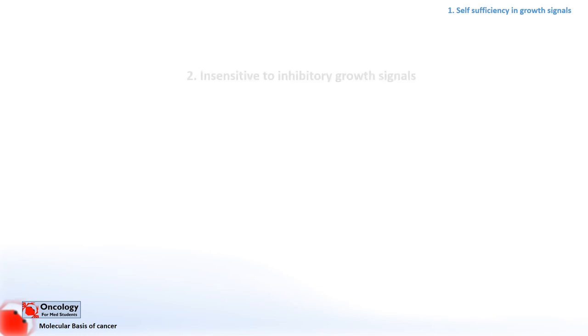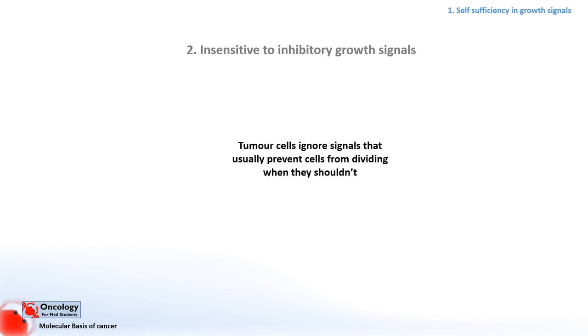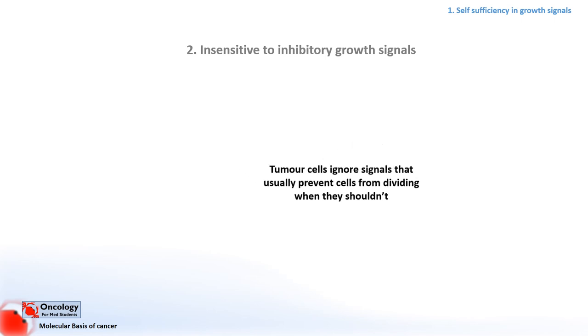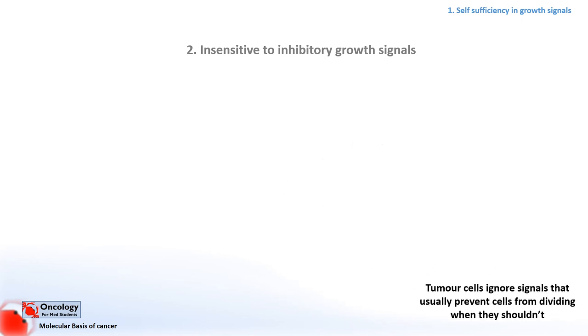Now that we've found out about self-sufficiency in growth signals, let's look at the next hallmark: insensitivity to inhibitory growth signals, or anti-growth signals. Basically this means that cancerous cells ignore the signals that usually prevent them from dividing when they shouldn't be. This is a slightly more complicated concept and to understand this we need to look at something called the cell cycle.